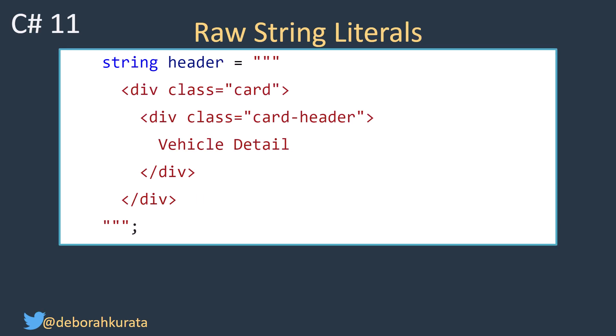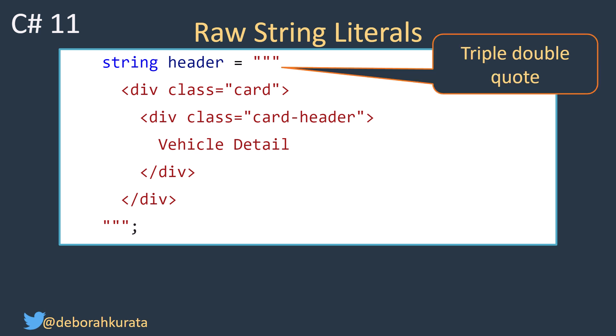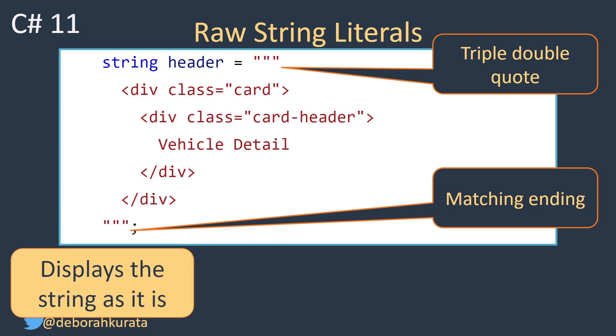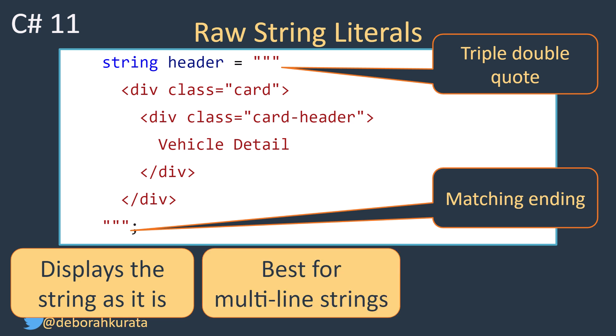A new feature in C# 11, released in 2022, is a raw string literal. A raw string literal begins with at least three quotes and ends with a matching set of quotes. Everything on the lines between the opening and closing quotes is the desired string. Notice that there is no need for double quotes or any escape characters — the string displays exactly as it is. This is a much better choice for multi-line strings over the original verbatim string literal.